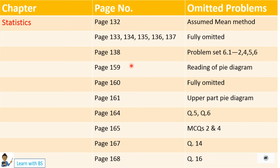Page 159, Reading of Pie Diagram has been omitted. Page 160 is fully omitted — nothing from page 160 will come. Page 161, the upper part — the Pie Diagram portion — is not to be done. Page 164, Question numbers 5 and 6 are omitted from the syllabus. Page 165 MCQs — 2nd and 4th sub-parts will not come. Page 167, Question number 14 is cancelled — it is cut from the portion. Page 168, Question number 16 has been cut from the portion.